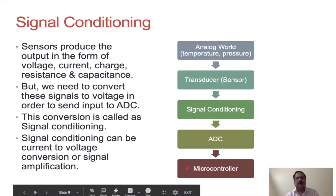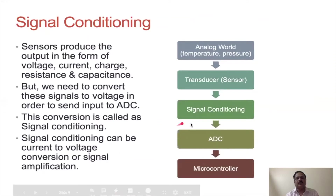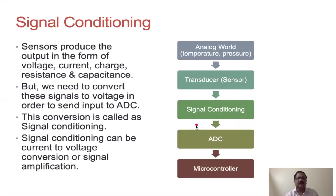Before the signal from a temperature or pressure sensor is applied to the A-to-D converter, some signal conditioning is needed. As the signal travels from one device to another it becomes weak, so amplification is required to bring it to the required level. Buffers and amplifiers are used for this signal conditioning. After conditioning, the signal is applied as input to the ADC, which provides a digital output that then goes to the microcontroller.